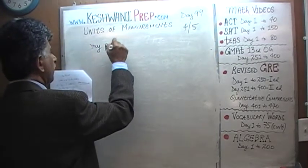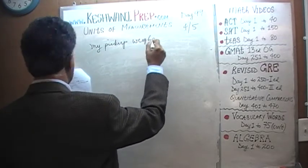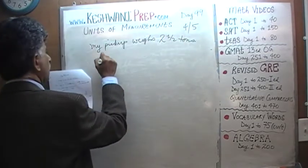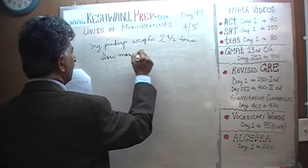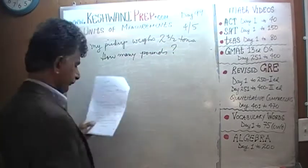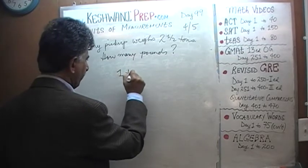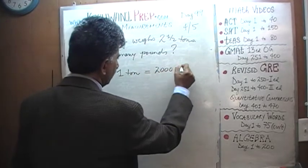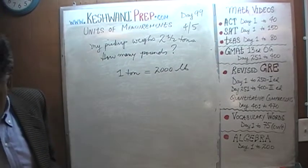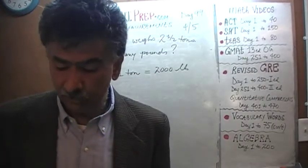My pickup weighs two and a half tons — how many pounds is that? One ton equals two thousand pounds. This is brand new information we haven't talked about before. One ton equals two thousand pounds — this is given to us.